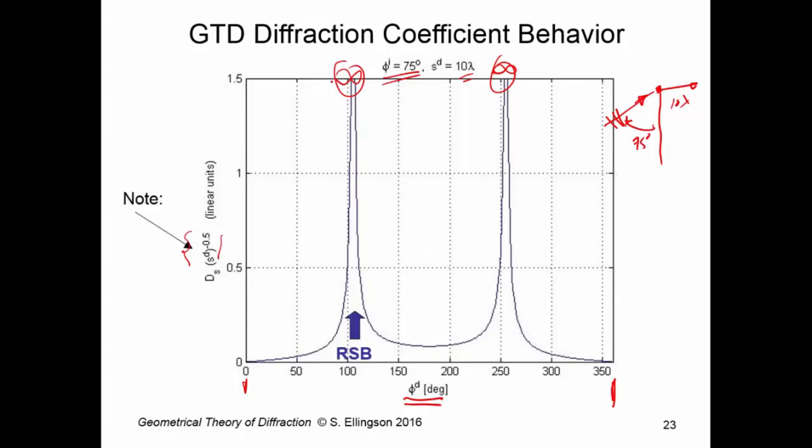These two points here are the ones I warned you about. Those are where the denominators of the diffraction coefficient go to 0. Now, we see, just in this result, that those angles at which the diffraction coefficient blows up correspond to the reflection shadow boundary, shown here, and the incident shadow boundary, shown here. And you can verify this for yourself. This, in fact, is the problem with the GTD diffraction coefficients. They are invalid at the shadow boundary, at both the reflection shadow boundary and the incident shadow boundary.